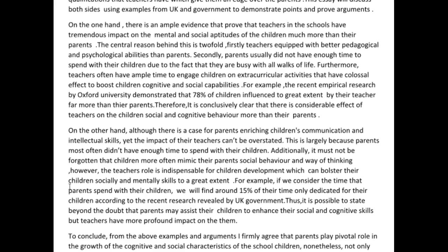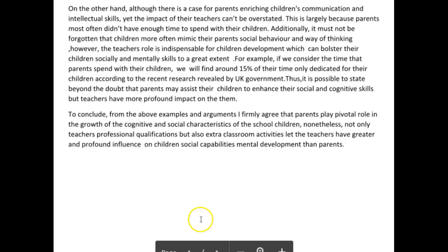Therefore, the ground is really set through parental influence. Then you could say: however, once children become school age, this influence declines because parents spend much less time with children, and this time is then taken up by teachers as well as friends. Those are just ideas — I'm not saying that's exactly what you should have written, but those are things you could have developed in this paragraph. Then you could have talked about why teachers are so important and crucial. 'To conclude, from the above examples and arguments, I firmly believe that parents play a pivotal role in the growth of the cognitive and social characteristics of school children. Nonetheless, not only teachers' qualifications but also extracurricular activities let teachers have a greater and more profound influence on children's social capabilities.'